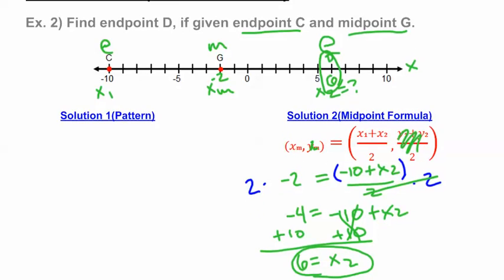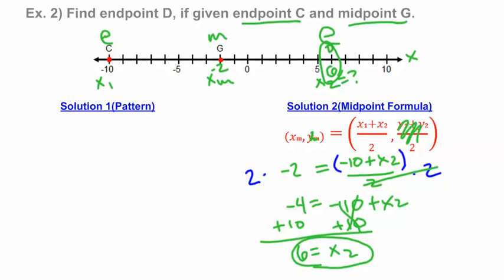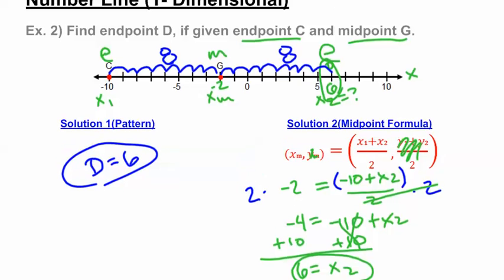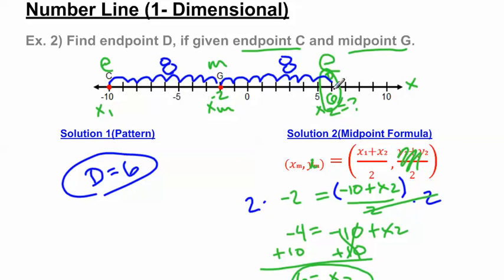The pattern between C and G is 1, 2, 3, 4, 5, 6, 7, 8. Applying that same pattern from G: 1, 2, 3, 4, 5, 6, 7, 8 — we get that endpoint D equals 6. Both methods give us 6, so hopefully this helps you understand how to find missing endpoints when dealing with midpoint problems. I hope you have a good day. Bye-bye.